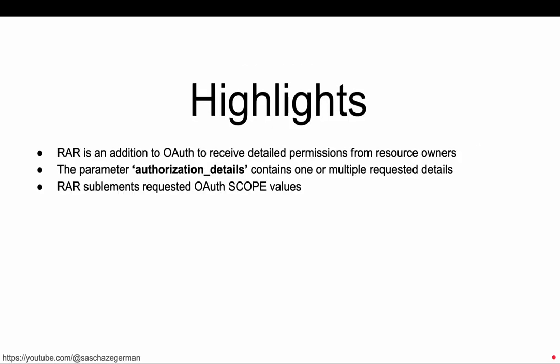So before we get really into it, here are a few highlights. Rich authorization requests is an addition to the OAuth protocol and it can be used with OAuth and OpenID Connect. It is meant to add the ability to request detailed permissions from resource owners. The parameter authorization details contains one or multiple requested details, and the idea is to use this in addition to OAuth scope values, where OAuth scope values are very limited — they refer to something like email or profile and it's not really detailed — whereas this spec allows a client to request as many details as it needs in order for a user to grant or deny a request.